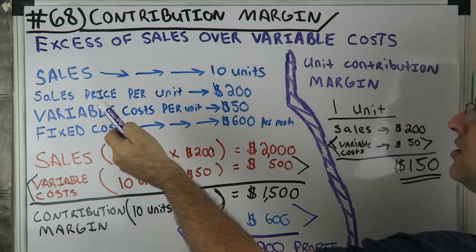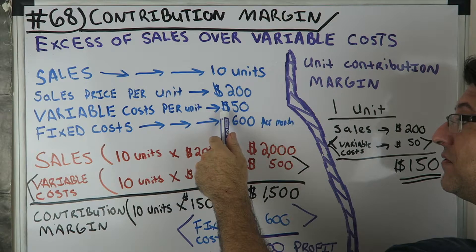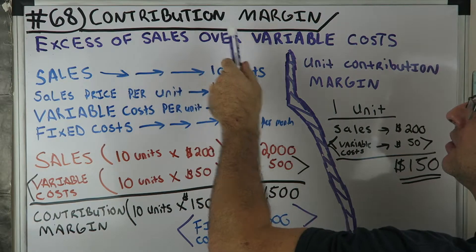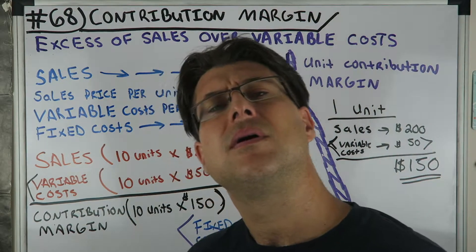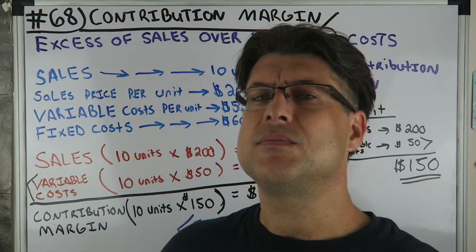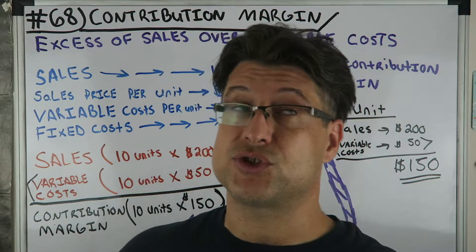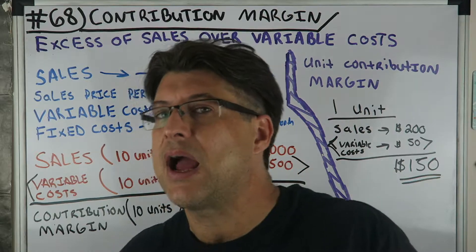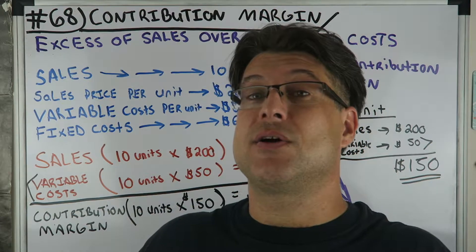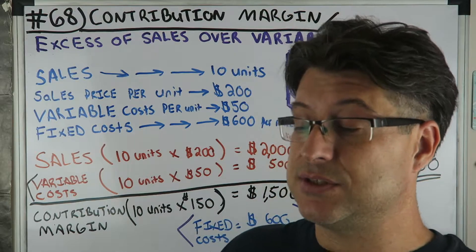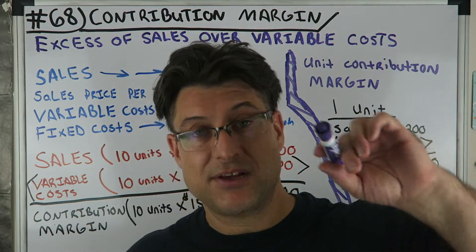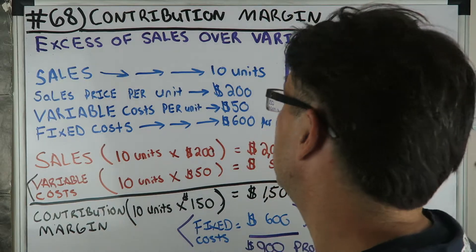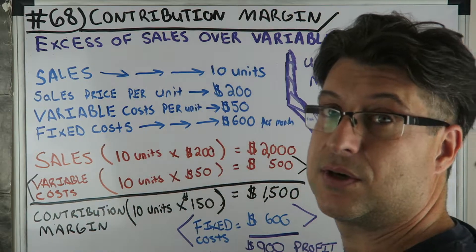So that's the excess of sales over variable costs — sales price $200, variable costs $50, so $150 per unit is the contribution margin. I don't really have a memory trick for contribution margin. If you can't remember it, just write it on your paper every morning when you're studying: contribution margin is sales over variable costs.